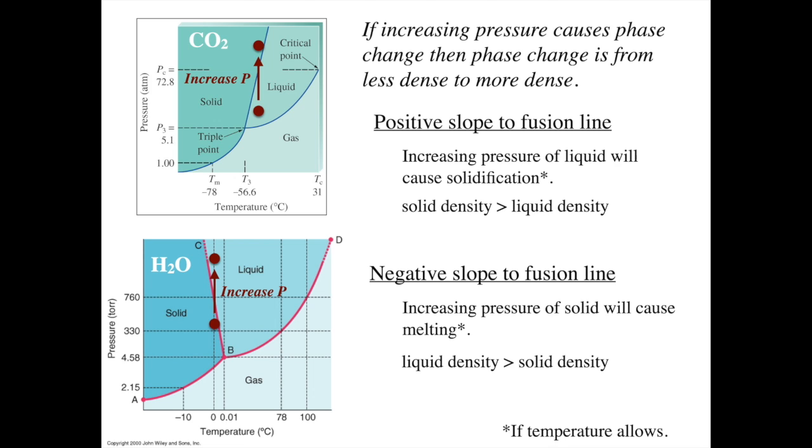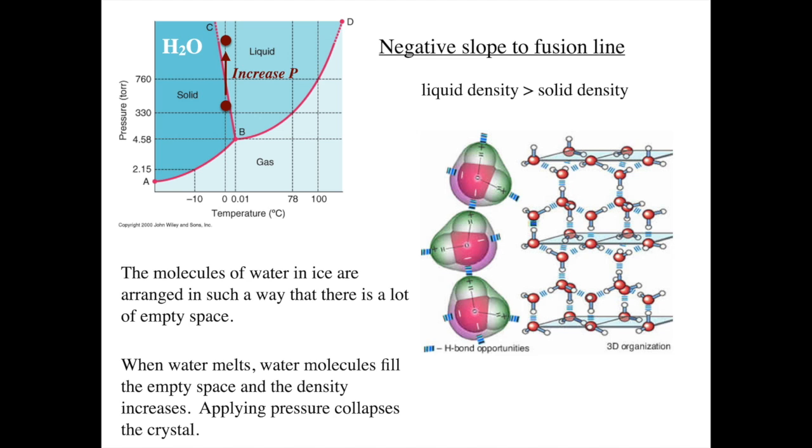And as you know, if you have a glass of water and there's ice, it floats. Why does water have such an unusual slope to its fusion line? Why is solid water less dense than liquid water?